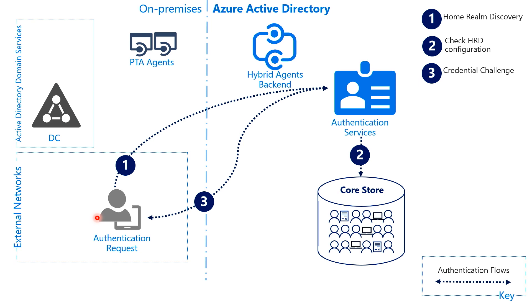This is where the other components come into play. We have here the hybrid agents backend service, and that provides the capability to dispatch work to agents on-premises that do multiple tasks. One of those agents happens to be the pass-through authentication agent. The way it works is that the authentication service puts a request to validate a password in a queue through the hybrid agent backend service. Then the PTA agents — which are lightweight Windows services installed on premises — have one job and one job only: to pick up those requests from the queue. The message in the queue is encrypted using the public key of the agents, and the agent that picks up the work decrypts the message with its private key.